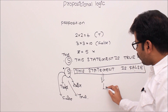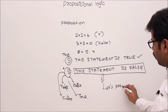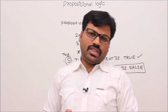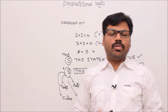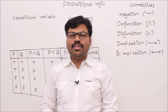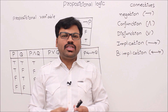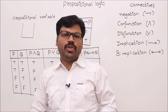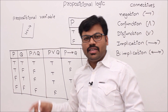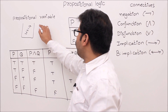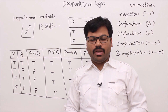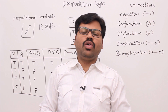This is called the liar paradox. In propositional logic, we talk about only propositions — we don't consider paradoxes. The theory of propositional logic works only for proper propositions. Let's continue. A propositional variable is a container which can hold a proposition. For example, you can keep the proposition '2×2=4' inside it, and that container's truth value becomes true. We denote propositional variables by p, q, r, and so on.